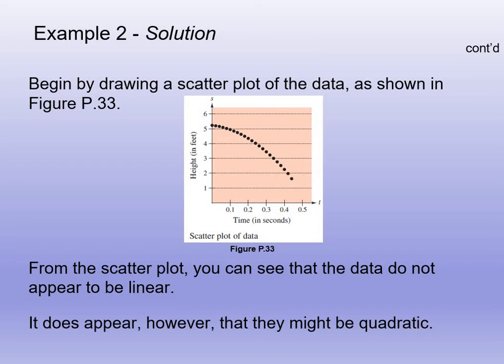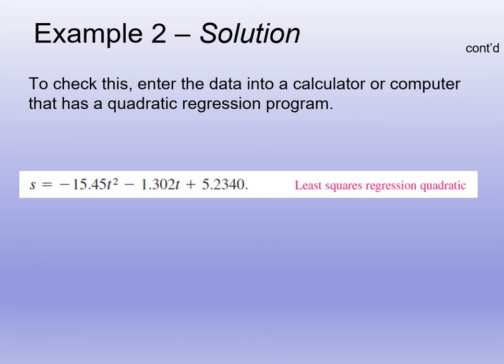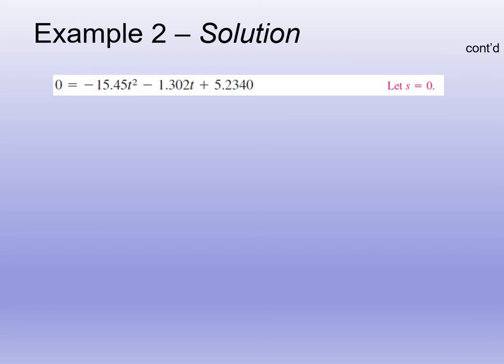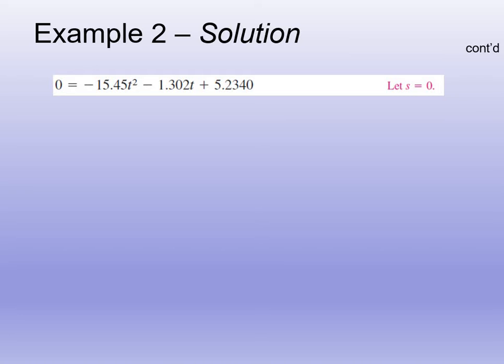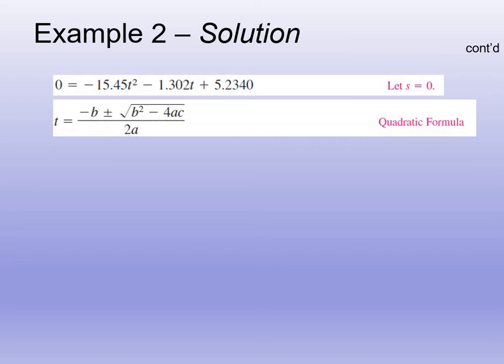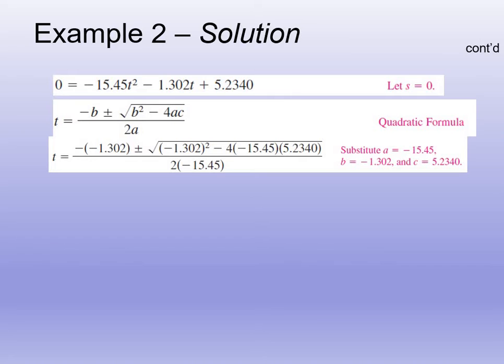This is a review. If you don't remember how to do this, I'm just walking you through how to use the calculator. We can use that model to predict when the basketball hits the ground. That's when height is 0. We set 0 equal to the equation. The best way to solve for T is using the quadratic formula. Negative B over 2A plus or minus the square root of B squared minus 4AC all over 2A.